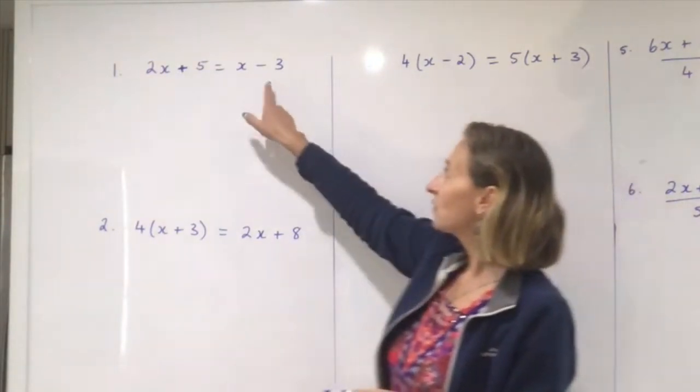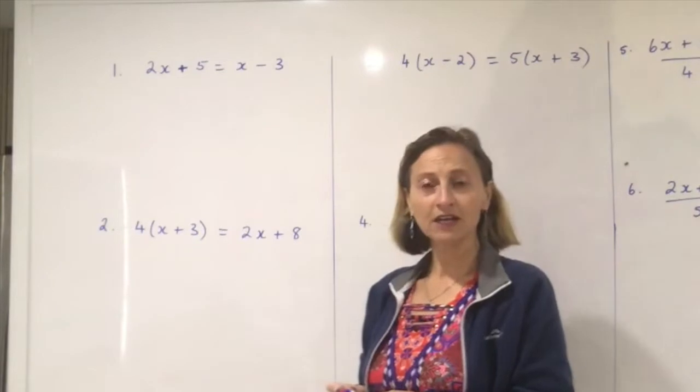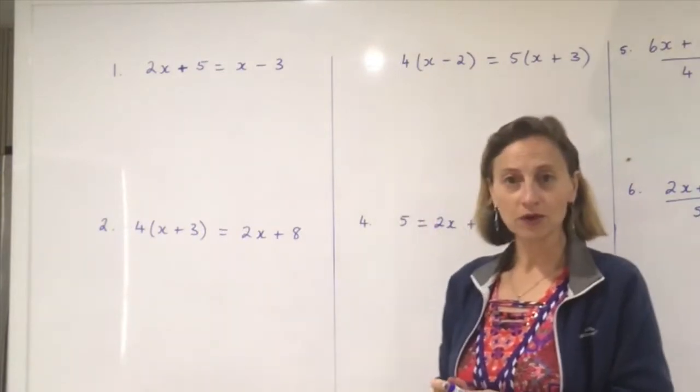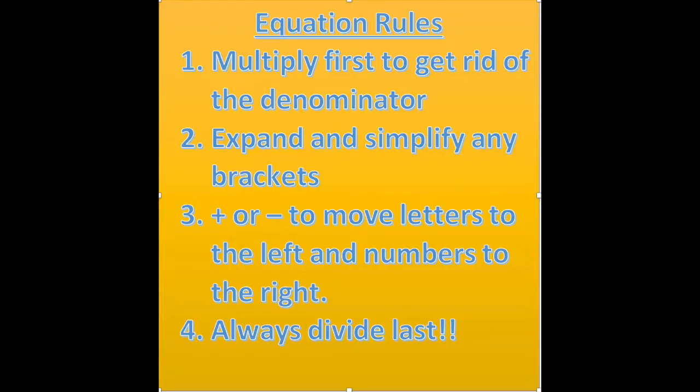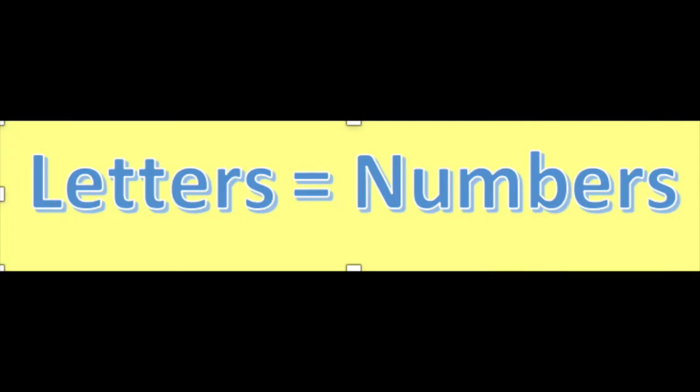Let's have a look at the first one. Don't forget our rules. Rule number one: always get rid of the denominator first. Rule number two: expand and simplify. Rule number three: move the letters and the numbers so that letters are on the left and numbers on the right. And rule number four: always multiply last.